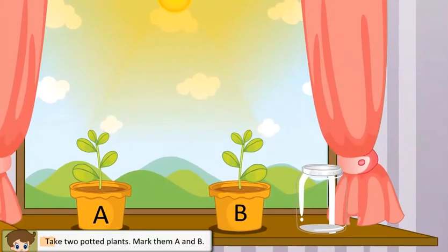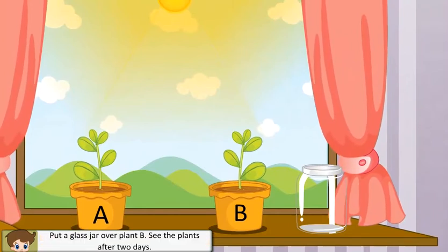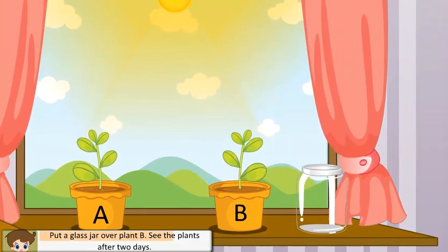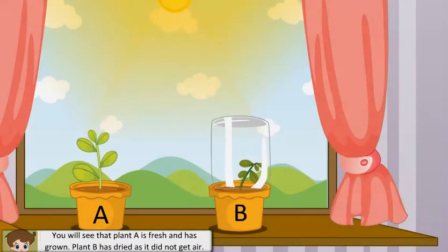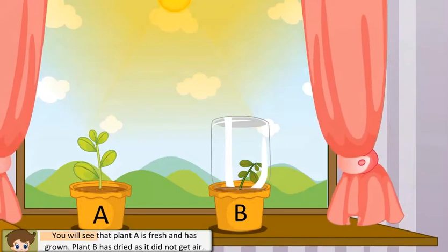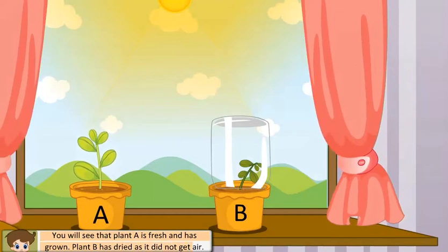Take two potted plants. Mark them A and B. Put a glass jar over plant B. See the plants after two days. You will see that plant A is fresh and has grown. Plant B has dried as it did not get air.